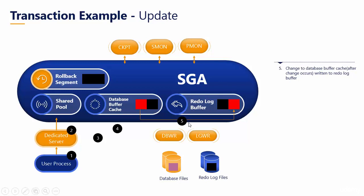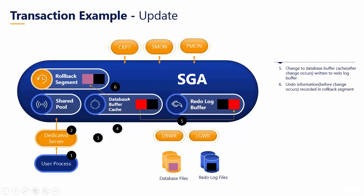In the fifth step, whatever changes were made to the database buffer cache are written into the redo log buffer. And in the sixth step, the undo information — that means the data blocks before they were modified — are sent to the rollback segment and stored there.